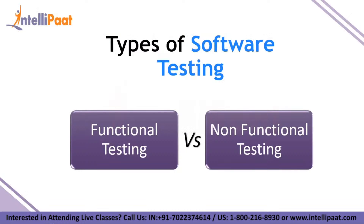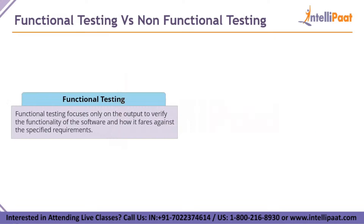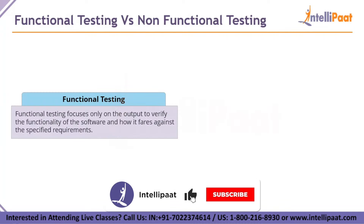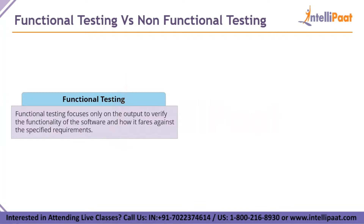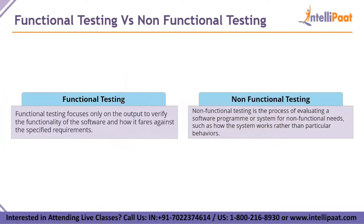We'll now discuss the two types of software testing: functional testing and non-functional testing. The purpose of functional testing is to verify the functionality of the software. It mainly focuses on evaluating the output of a software program by giving acceptable input and comparing it to the functional requirements. Non-functional testing verifies non-functional aspects such as performance, reliability, usability, etc. It reduces the risk and expense associated with non-functional parts of the product and improves your understanding of product behavior and technology.